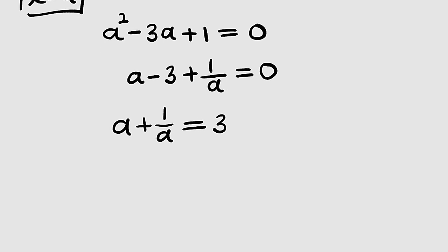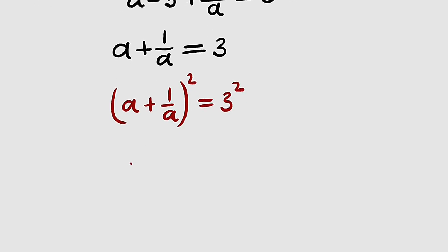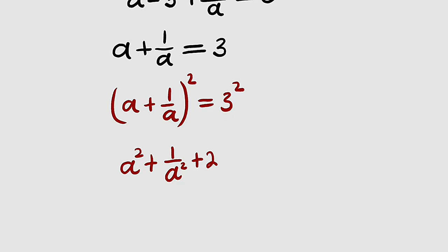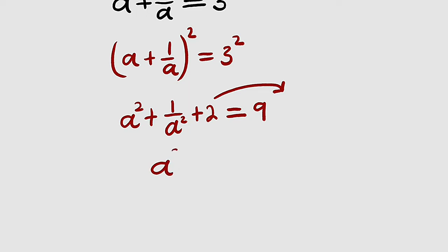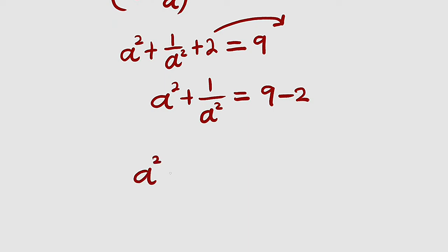Next, I want us to square both sides. We have a plus 1 divided by a, all squared, equal to 3 squared. On the left hand side, we square the first term, square the second term, and add 2 multiplied by the first term multiplied by the second term. Since a multiplied by 1 divided by a is 1, that middle term is just 2. On the right hand side, 3 squared equals 9. Taking 2 to the right hand side, we get a squared plus 1 divided by a squared equal to 9 minus 2, which equals 7.